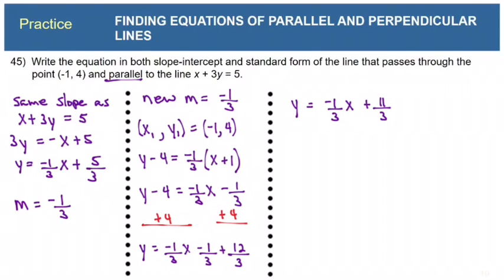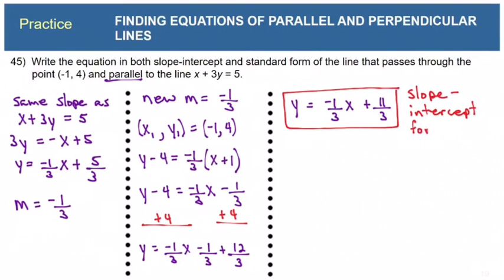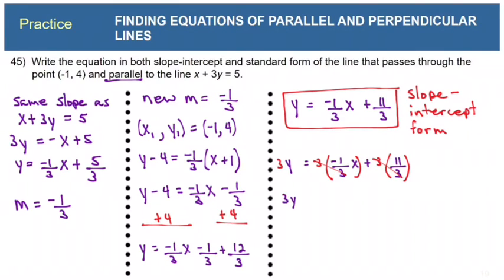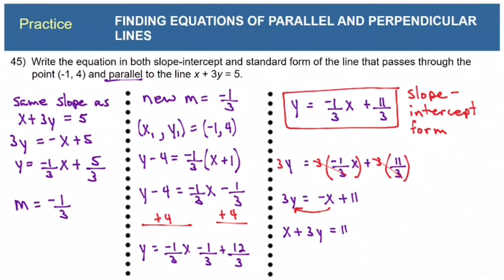Now let's transform to standard form. We multiply everything by 3 to eliminate denominators: the 3s cancel, giving 3y equals negative x plus 11. This is almost standard form — we bring the negative x to the left so it becomes positive, giving x plus 3y equals 11. That is the standard form of this line.